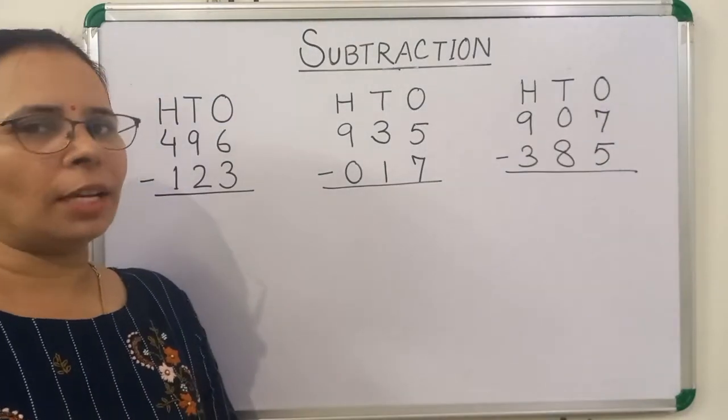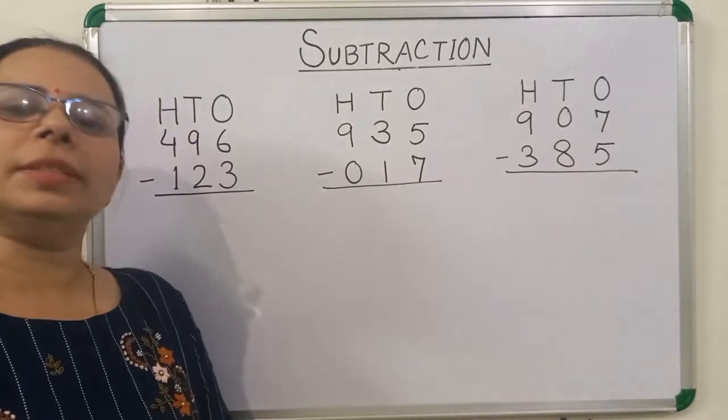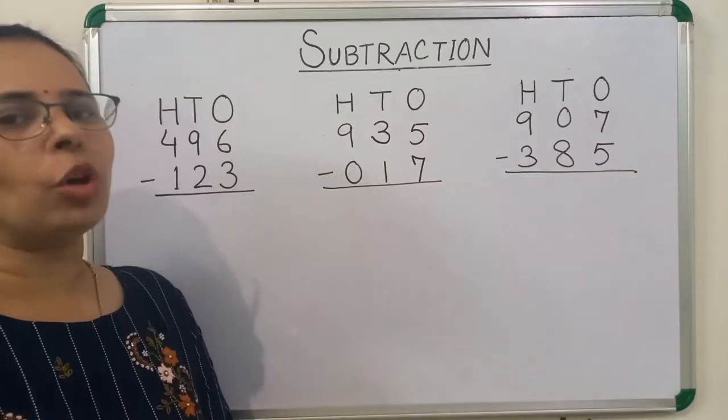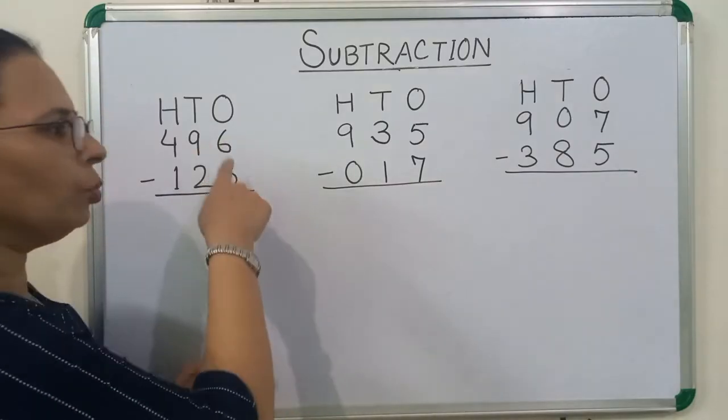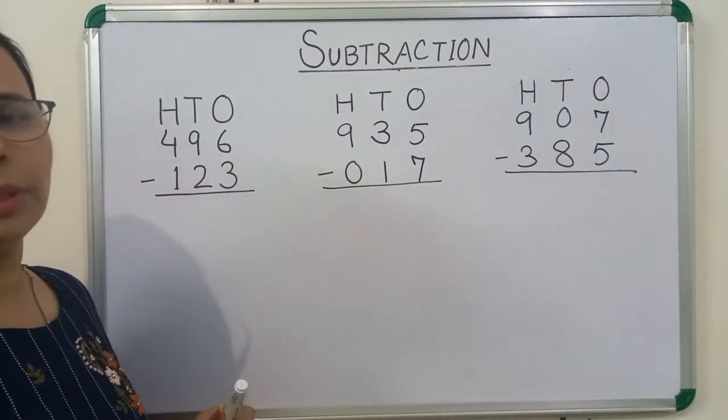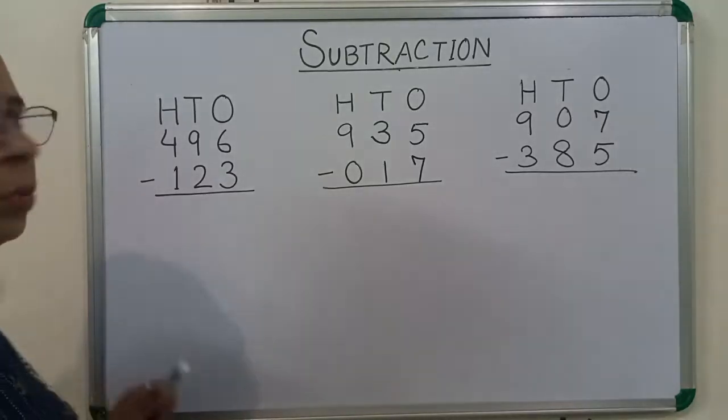Always start subtraction from ones place number. In subtraction, minuend is always greater than subtrahend. It means first number should be greater than second number. Now we will solve this question.